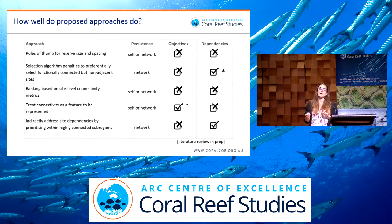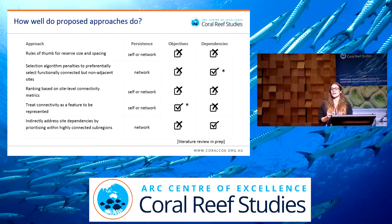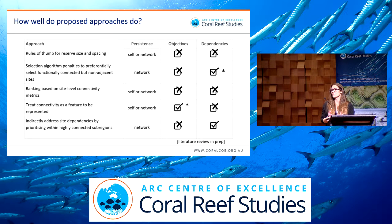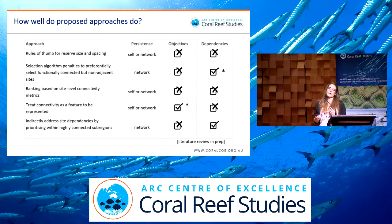Something I'm working on is reviewing existing approaches that have been proposed for using connectivity information to inform the design of reserve networks. These fall broadly into five categories, ranging from simple rules of thumb for reserve size and spacing up to more complicated methods using connectivity matrices and inferred metrics. If we assess how well each does in addressing the three conceptual challenges — understanding the relationship with persistence, defining explicit objectives for connectivity, and accounting for dependencies between sites — none of them can achieve all of those things. Some address one or two, but there are usually caveats involved.